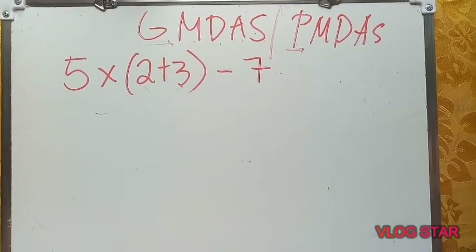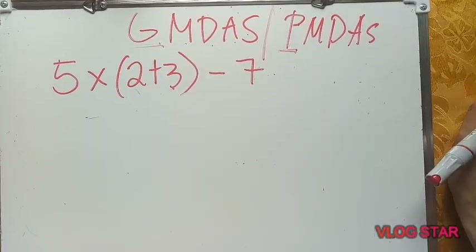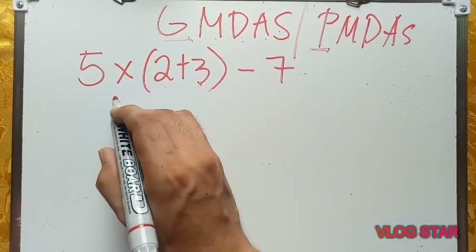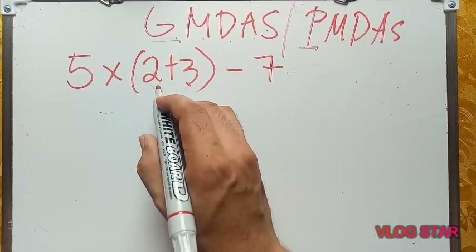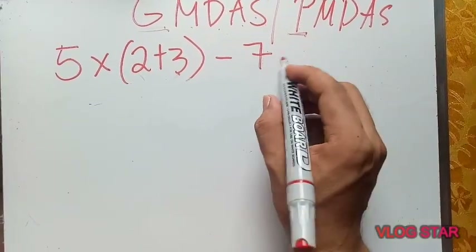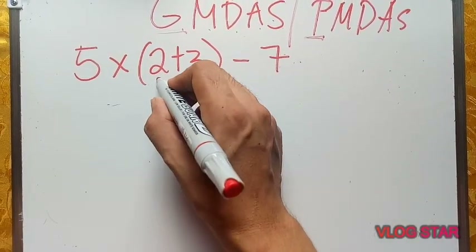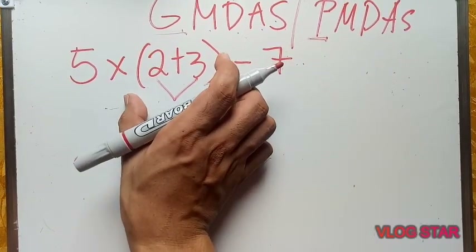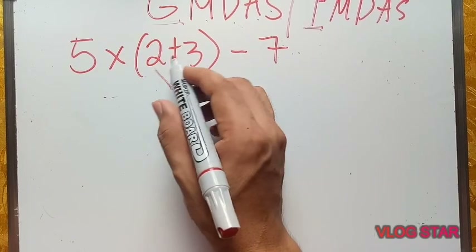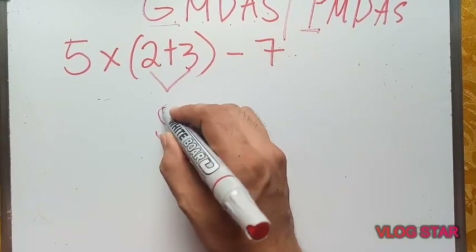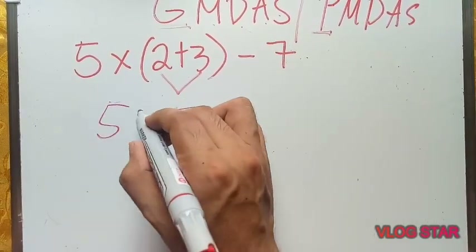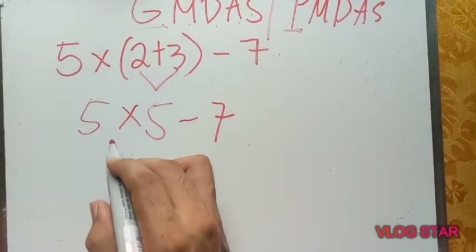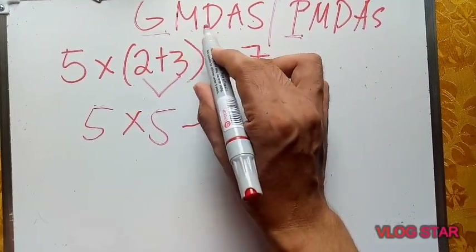Remember that we should work from left to right. Here is our mathematical expression: 2 times the quantity (2 plus 3) minus 7. We should solve first the number inside the parenthesis to remove the parenthesis sign. 2 plus 3 equals 5, then we have 5 times 5, minus 7.